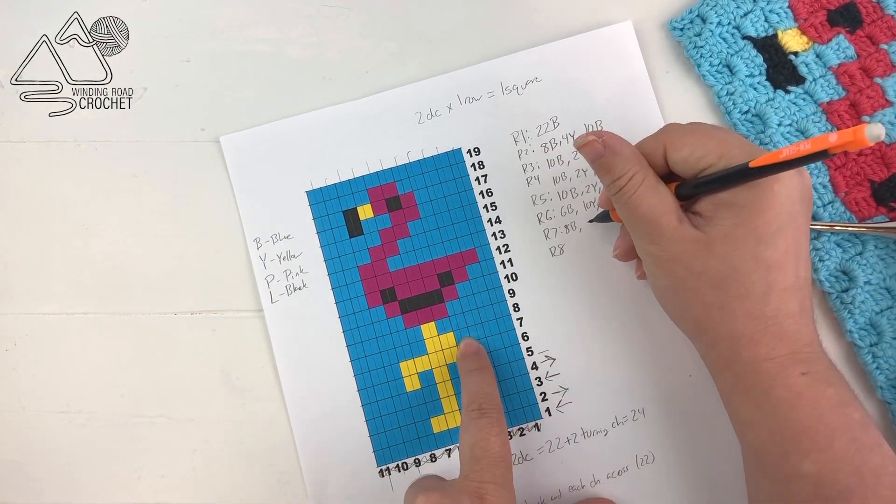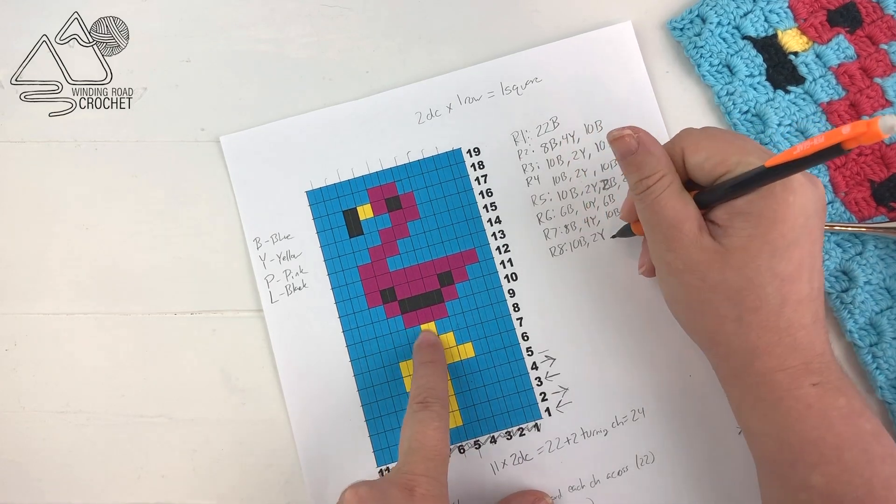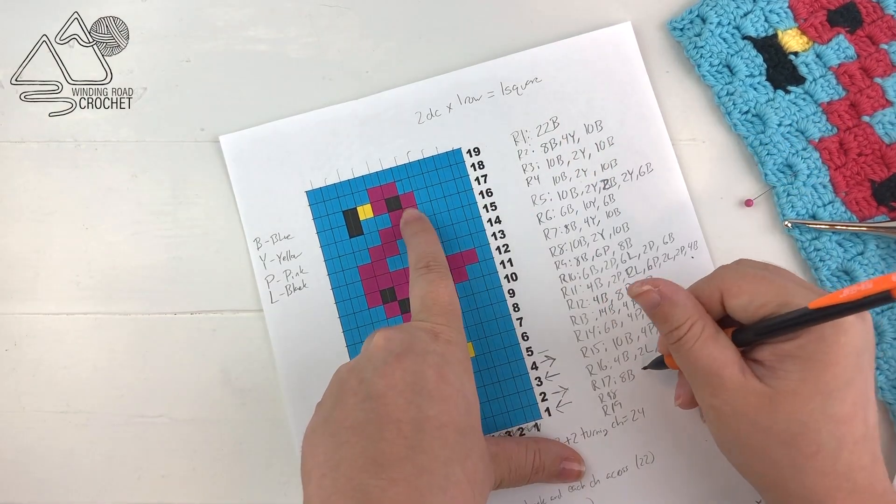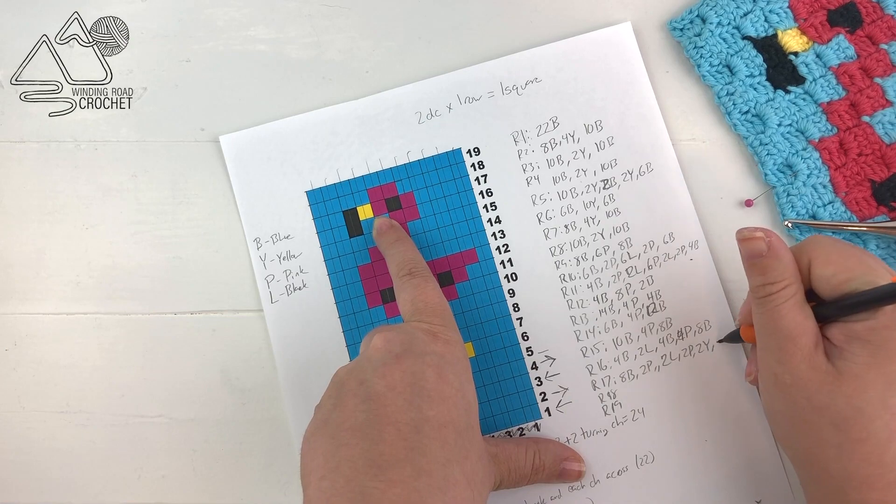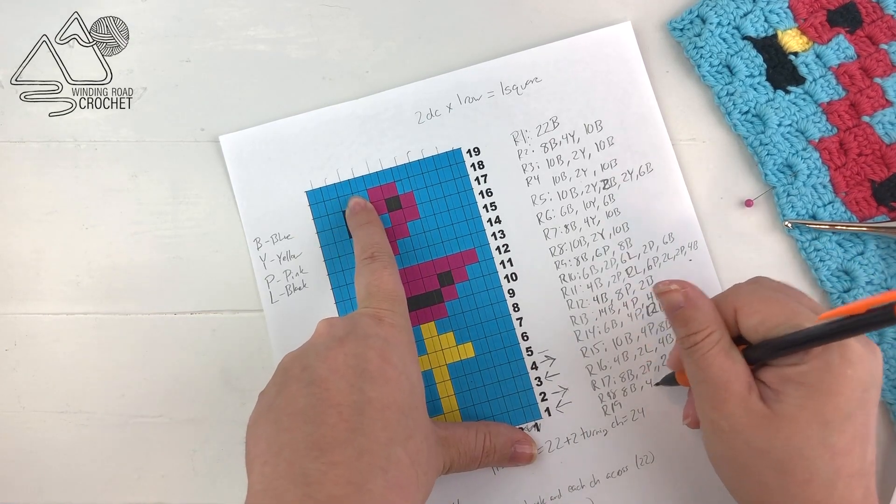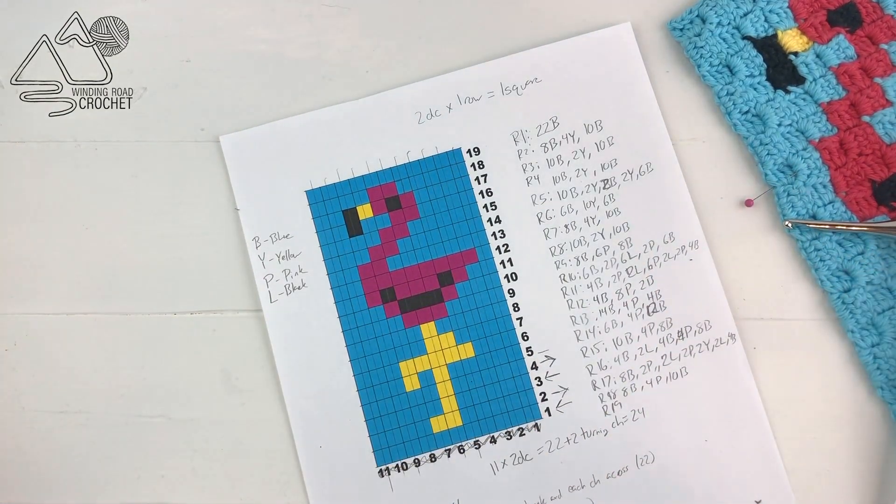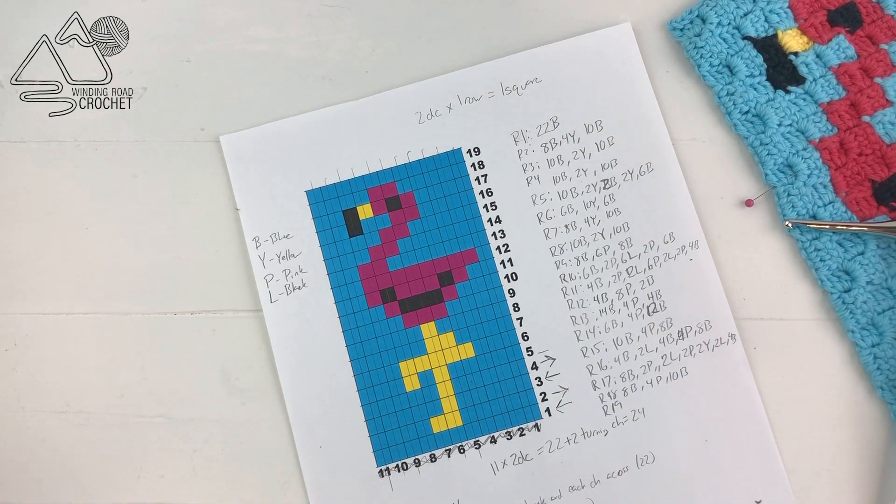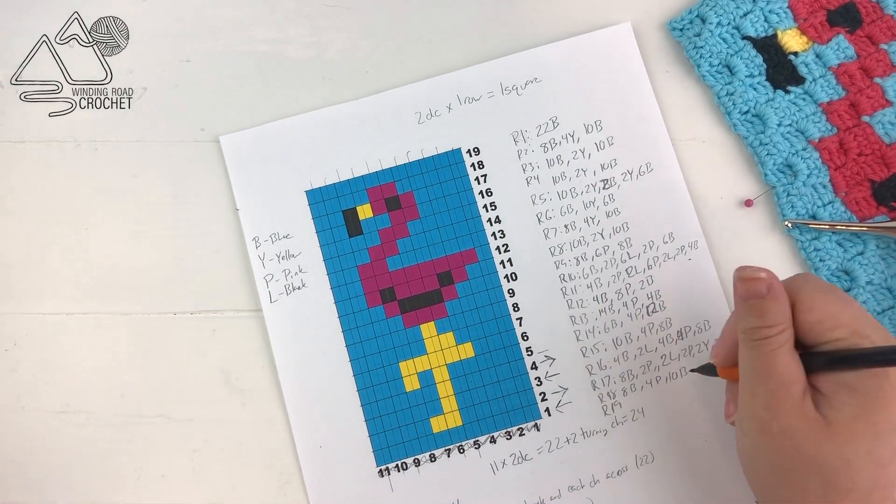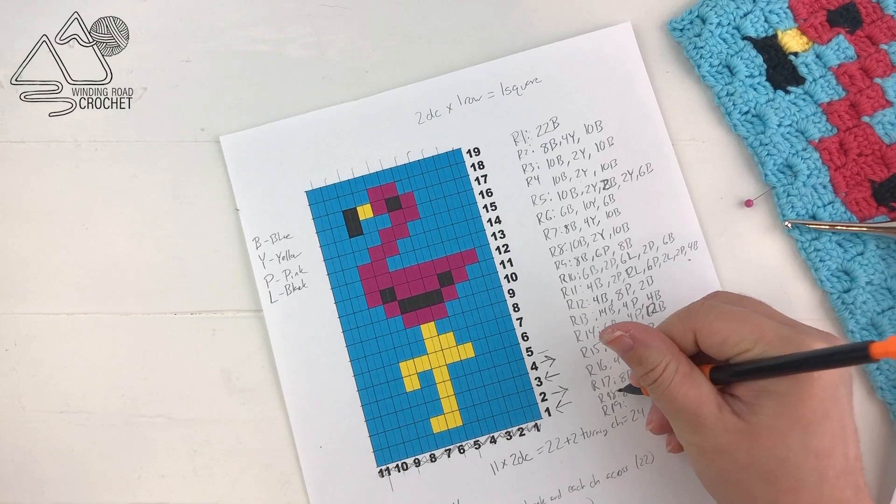So I'm going to go ahead and speed this up, but the idea is you're just going to be putting a number and a letter indicating the number of stitches you're going to do with that color, and continue to work yourself back and forth. This is a really great step not to skip, because it's definitely going to help keep you organized when working this pattern.